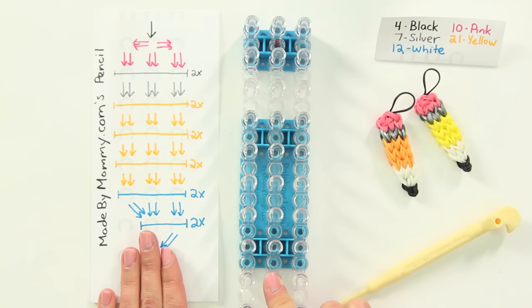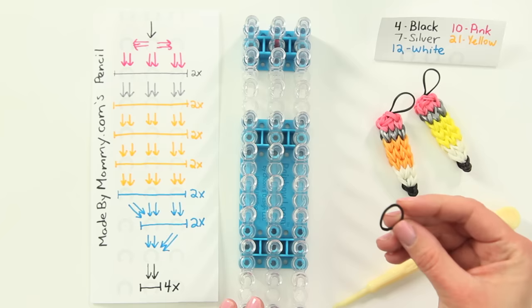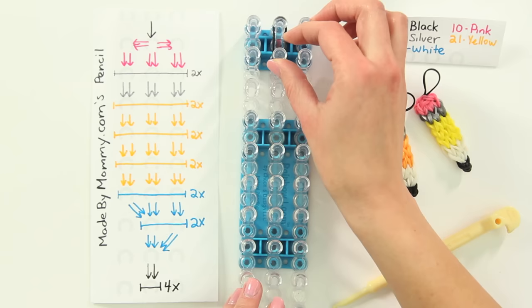The first rubber band you need is a single black rubber band. Place that on the top center peg and pull to the middle.